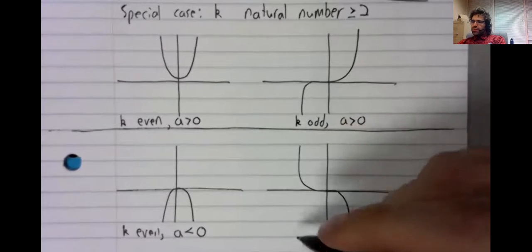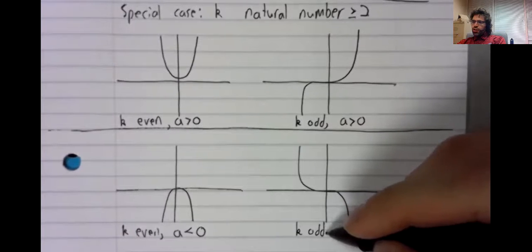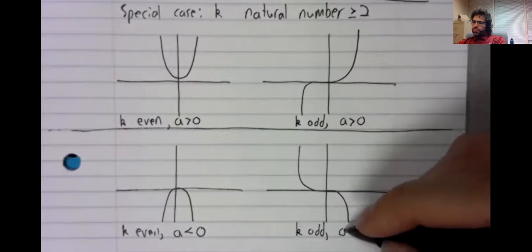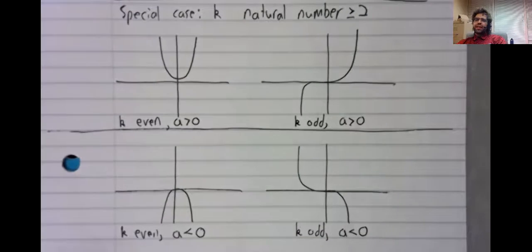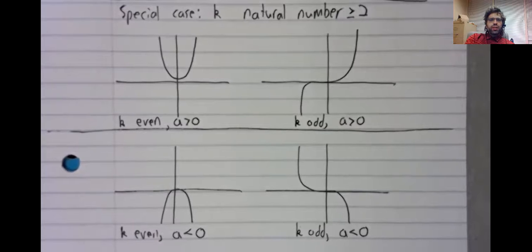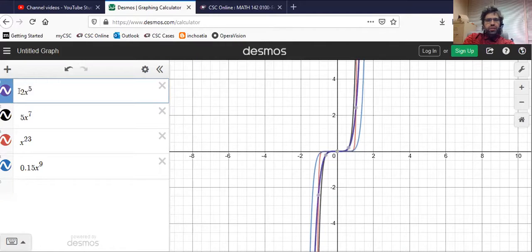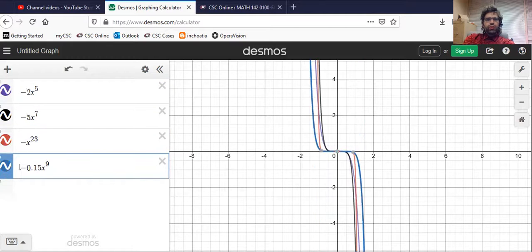And this is the k-odd, a negative case. Let's just before we end this video, let's look at that last case on Desmos.